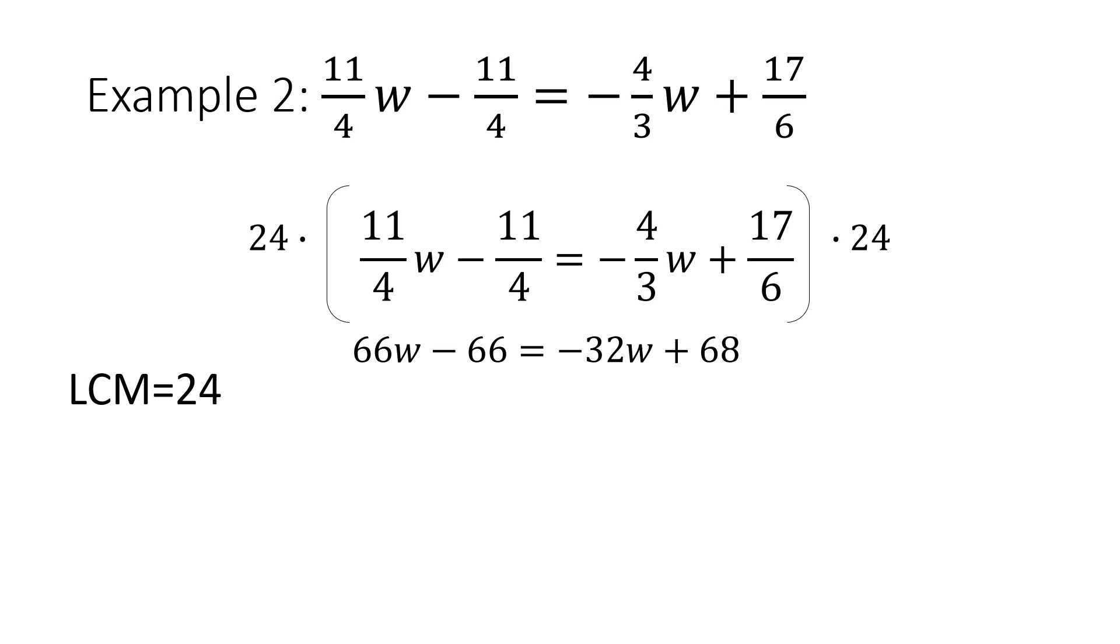What you do to one side of the equation you must do to the other. The 32W on the right is going to go away, and I'm going to simplify by adding 66W and 32W, which gives me 98W. Then I have 98W - 66 = 68.